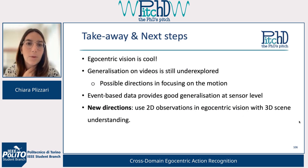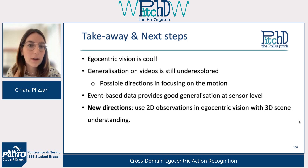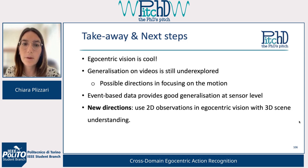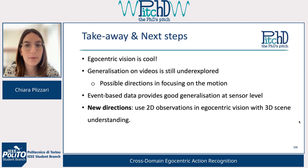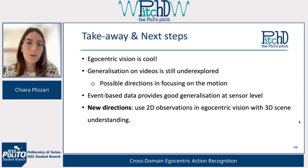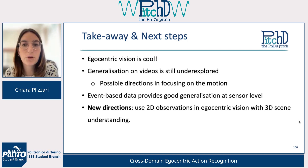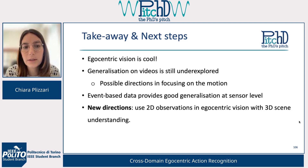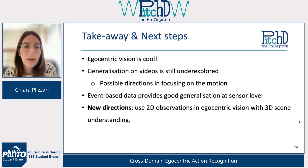As a conclusion, I give you some takeaways and next steps. I think egocentric vision is a very interesting topic and nowadays many big companies are trying to develop smart glasses for egocentric vision. In this field, one main problem is generalization, which I think is still underexplored. A promising direction is focusing more on motion modeling in videos rather than appearance information, and event-based data provides good generalization at the sensor level, making it a good solution to this problem.